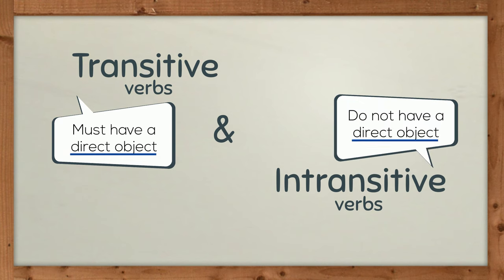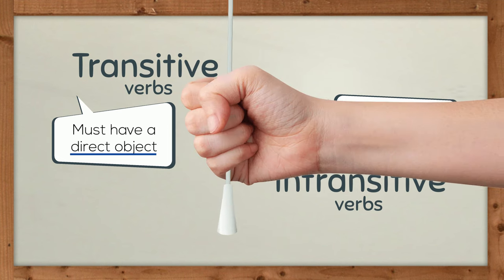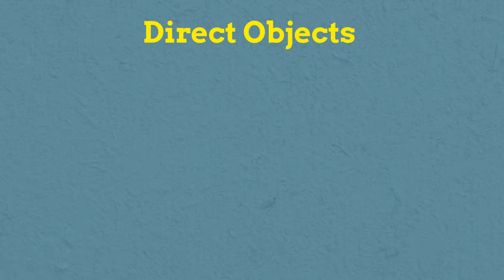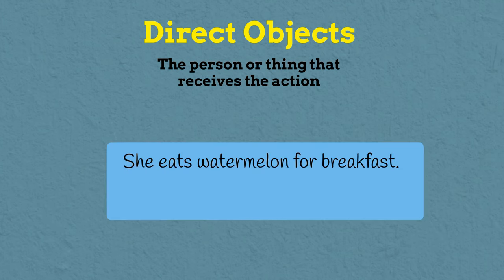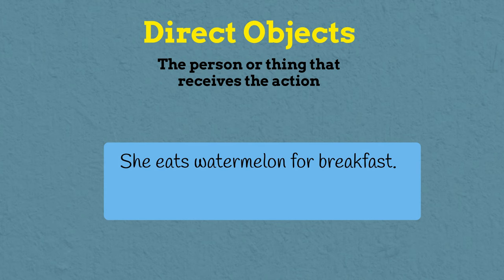Let's start by reviewing what a direct object is. A direct object is the person or thing that receives the action from the subject. For example, she eats watermelon for breakfast. The action is eat, and it's the watermelon that is receiving the action. The direct object in this sentence is the watermelon.